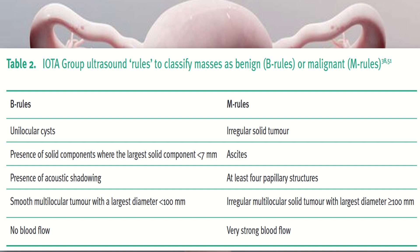The features of B rules include unilocular cysts, presence of a solid component where the largest solid component is less than 7 mm, the presence of acoustic shadowing, smooth multilocular tumor with the largest diameter of less than 100 mm, and no blood flow.